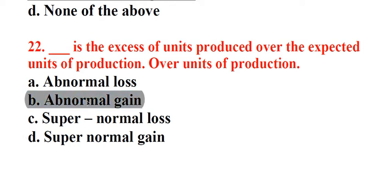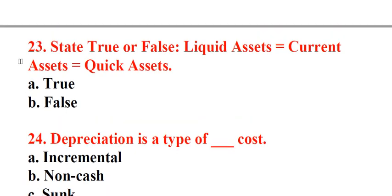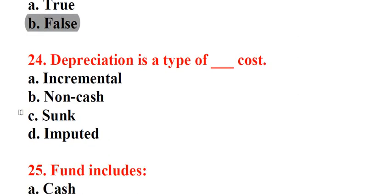Question 23: State true or false. Liquid assets equals current assets equals quick assets. A. True, B. False. Answer: B. False. Question 24: Depreciation is a type of underscore cost. A. Incremental, B. Non-cash, C. Sunk, D. Imputed. Answer: B. Non-cash.